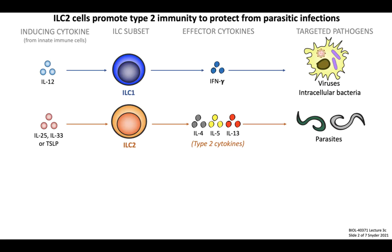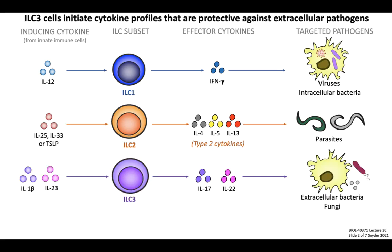ILC2s are activated by cytokines such as IL-25, IL-33, or TSLP. In response, ILC2s produce a group of cytokines collectively referred to as type 2 cytokines, since they mediate type 2 immune responses against parasitic infections. These include IL-4, IL-5, and IL-13, all of which are important in promoting the defense mechanisms of barrier surfaces to eliminate parasitic infections.